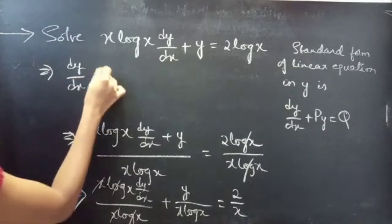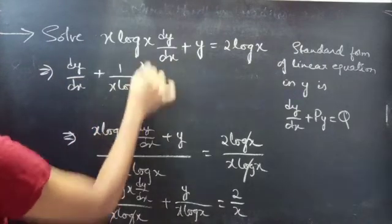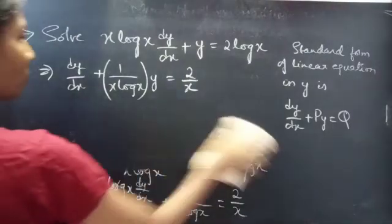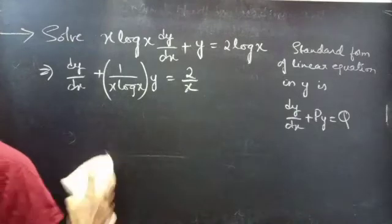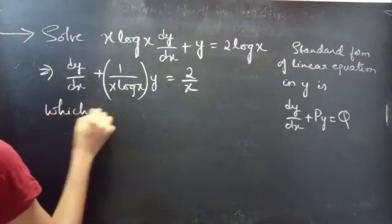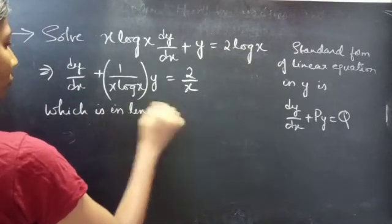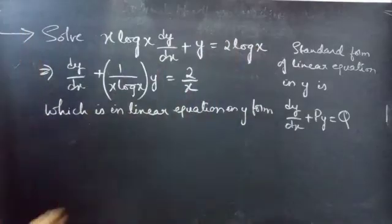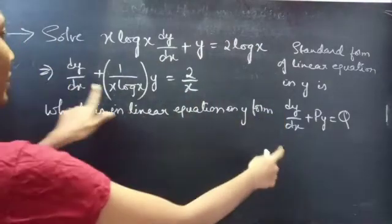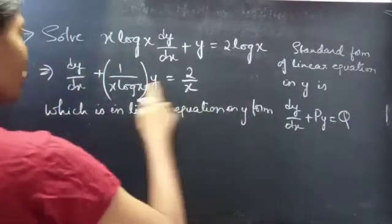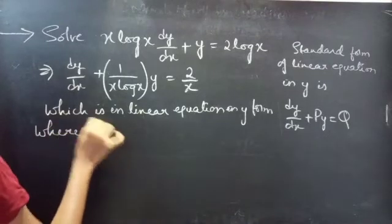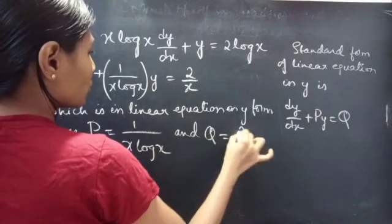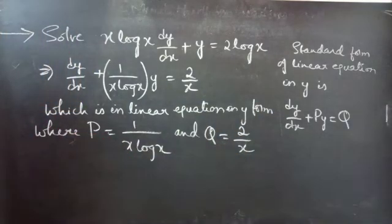So the equation dy/dx + 1/(x·log x) · y = 2/x is a linear equation in y. By comparing with dy/dx + p·y = q, we get p = 1/(x·log x) and q = 2/x. Here p and q are functions of x.